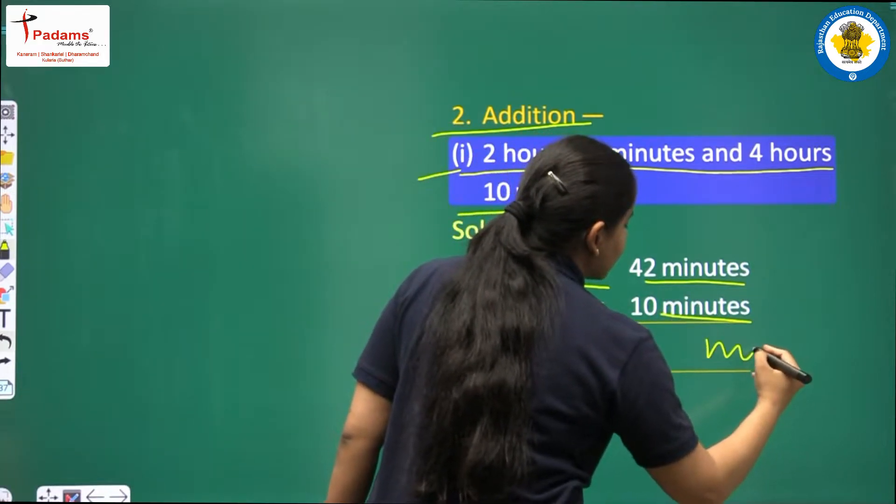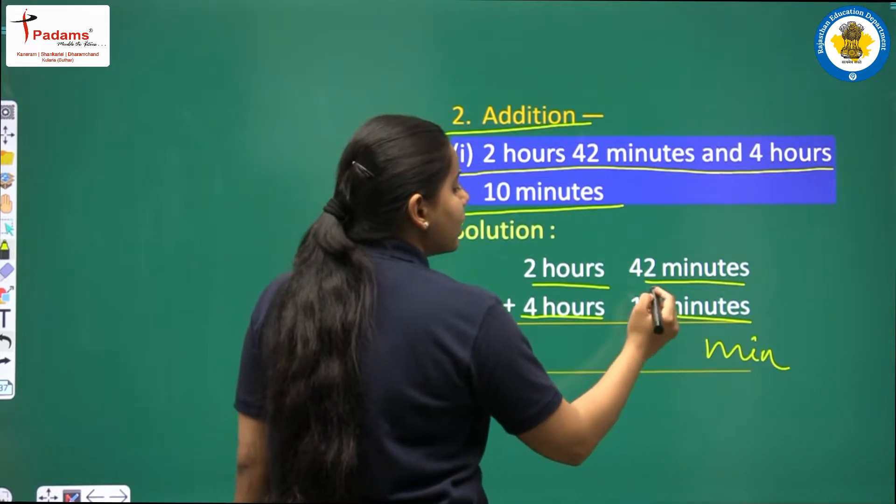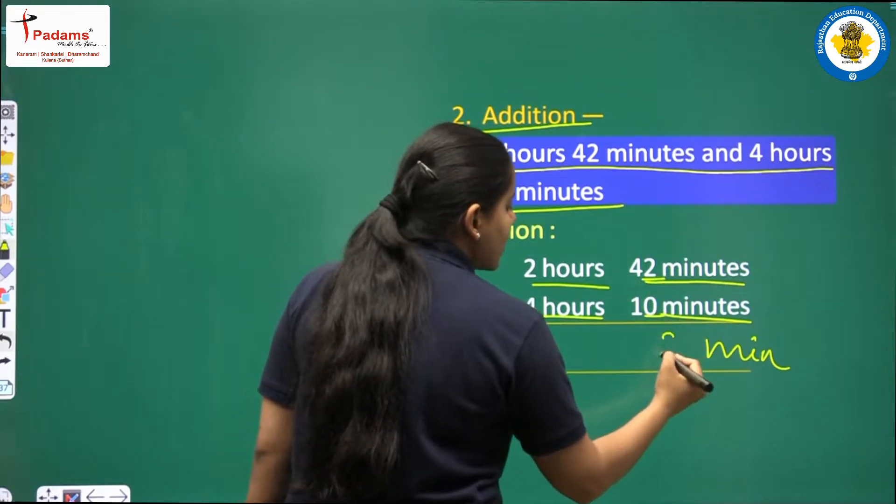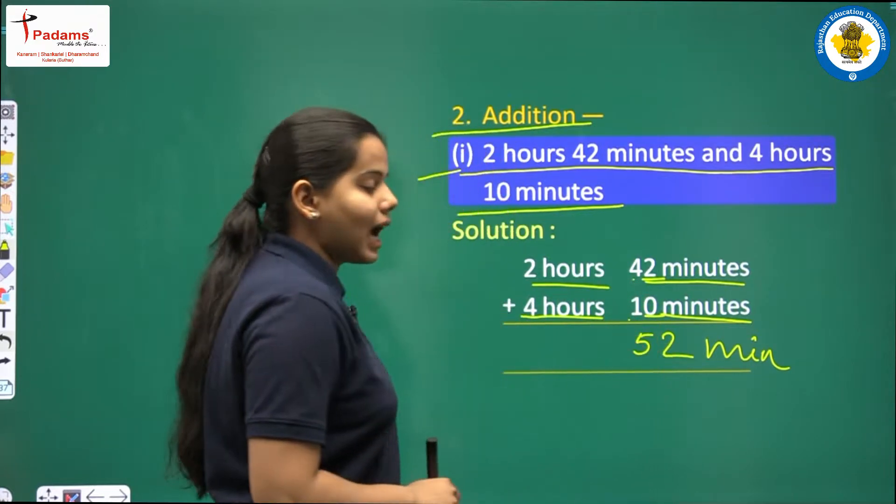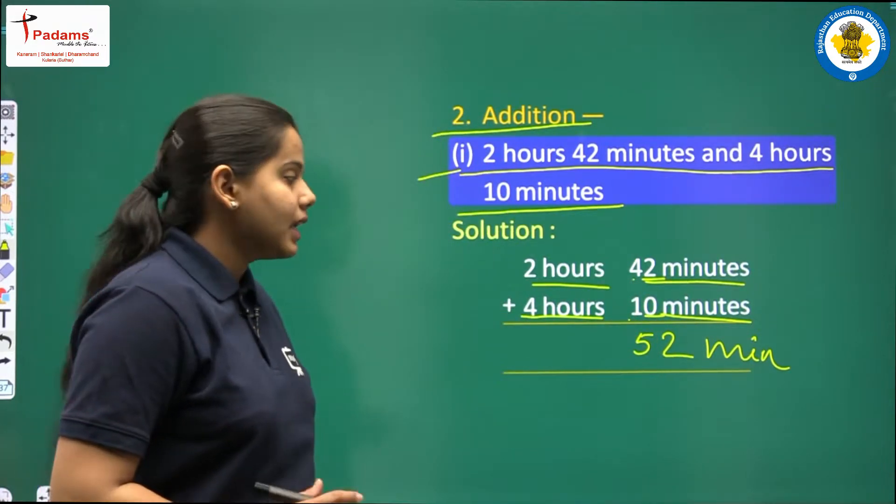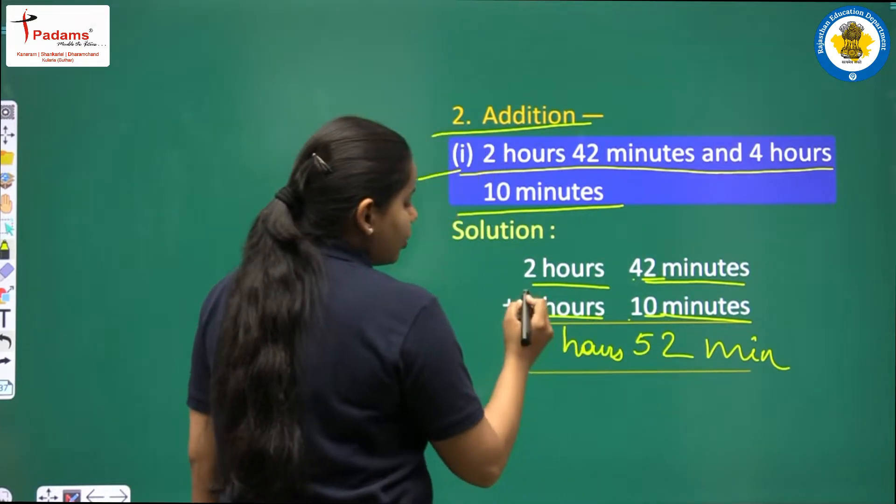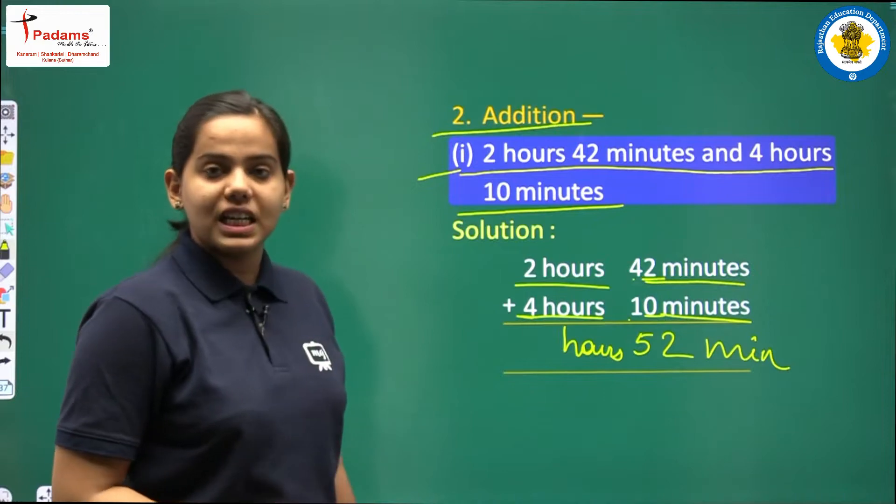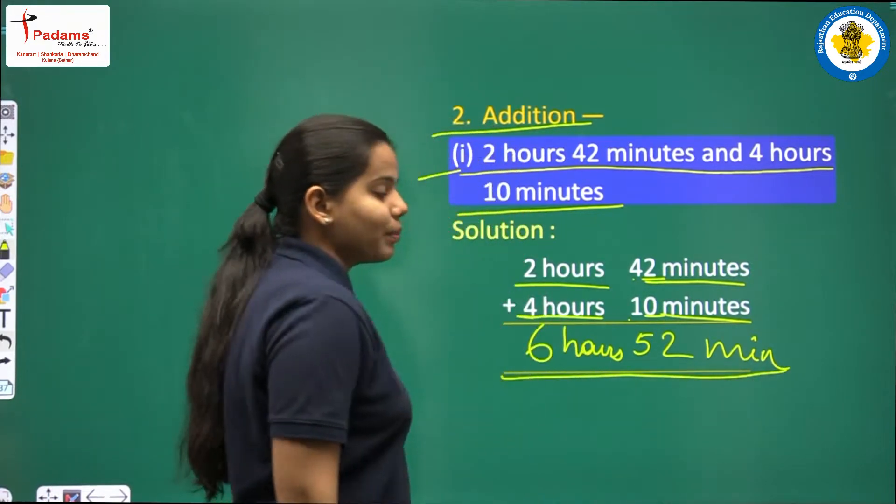Look, here we have written minutes, because the answer will come in minutes. So 2 plus 0, here you will get 2 only and 4 plus 1 is 5. So the answer is 52 minutes. Then we will solve for hours. 2 plus 4, the answer will be 6. So this answer is 6 hours, 52 minutes. Now we are going to solve the next part.